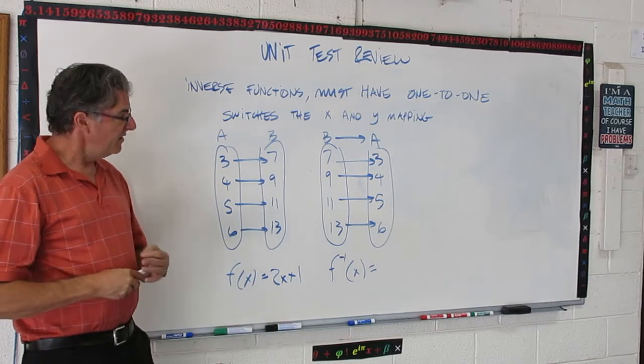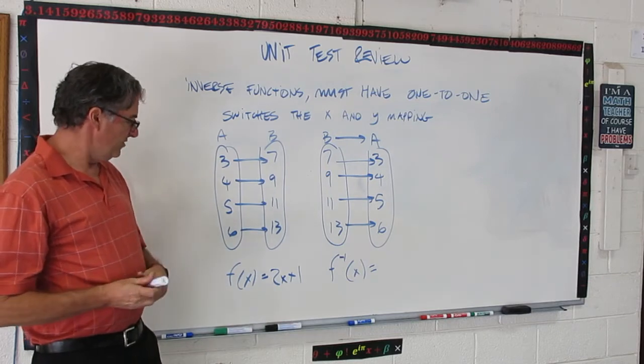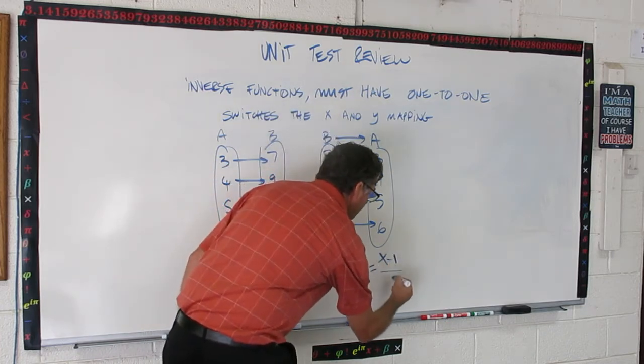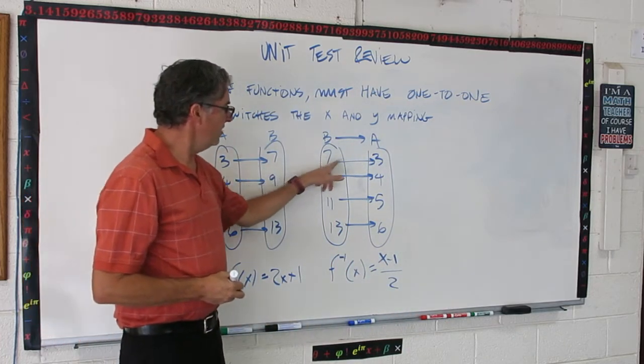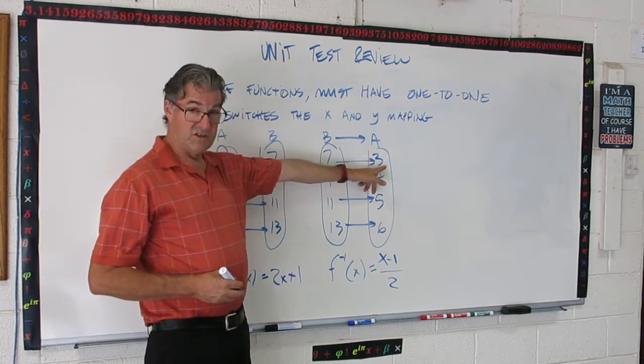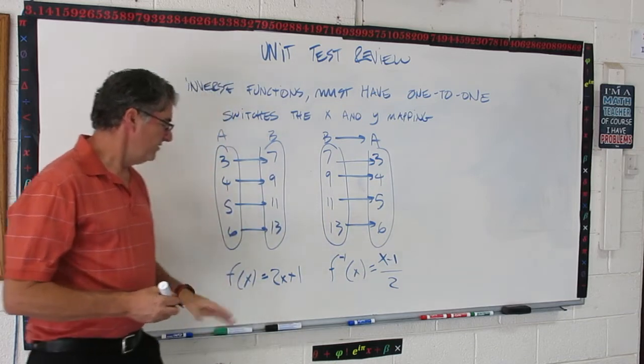Now, f inverse of x is a little different. So, what we're going to do here is we're going to do x minus 1 over 2. And that's how you get from here to there. x minus 1 is 6, over 1, or over 2 becomes 3, and so on. So, now we have our 2 functions.